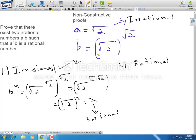For the second case, suppose root 2 raised to root 2 is rational. To make things clearer, let's call this value y instead of using it as b.